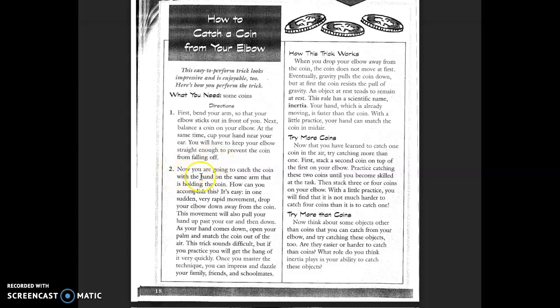Two. Now you're going to catch the coin with the hand on the same arm that is holding the coin. How can you accomplish this? It's easy. In one sudden, very rapid movement, drop your elbow down away from the coin. This movement will also pull your hand up past your ear and then down. As your hand comes down, open your palm and snatch the coin out of the air. This trick sounds difficult, but if you practice, you will get the hang of it very quickly. Once you master the technique, you can impress and dazzle your family, friends, and schoolmates.